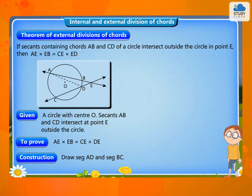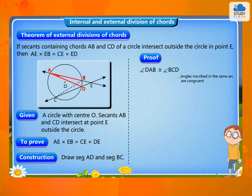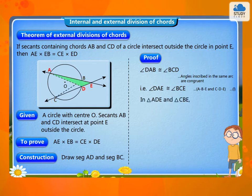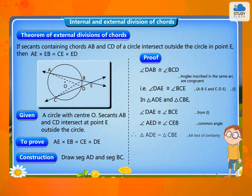Construction: draw segment AD and segment BC. Proof: Angle DAB is congruent to angle BCD, that is, angle DAE is congruent to angle BCE. In triangle ADE and triangle CBE, angle DAE is congruent to angle BCE, and angle AED is congruent to angle CEB.